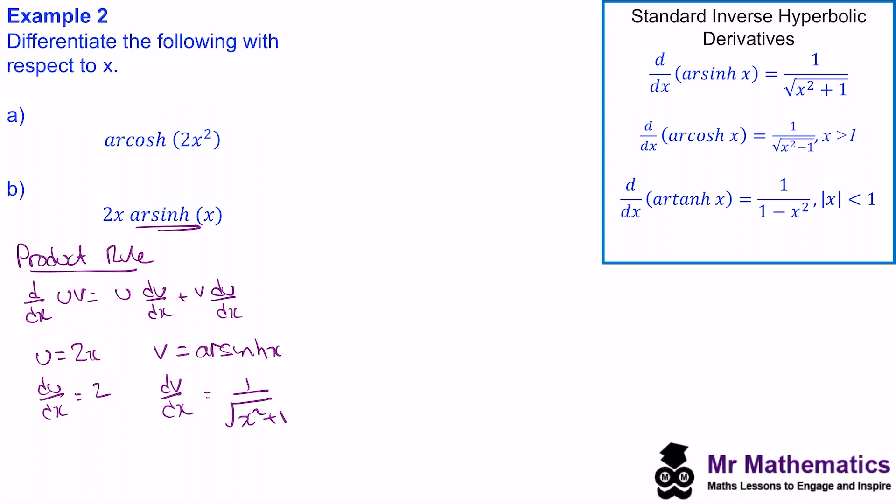And now we can substitute these four expressions into our product rule. So the derivative with respect to x will be u 2x times dv, which is 1 over the square root of x squared plus 1, plus v arsinh of x times du, which is 2. We can tidy this up by writing this as a fraction. So we have 2x over the square root of x squared plus 1, plus 2 times arsinh of x.